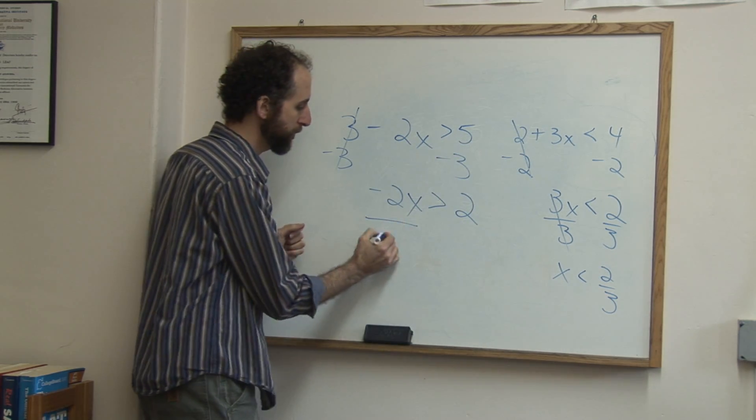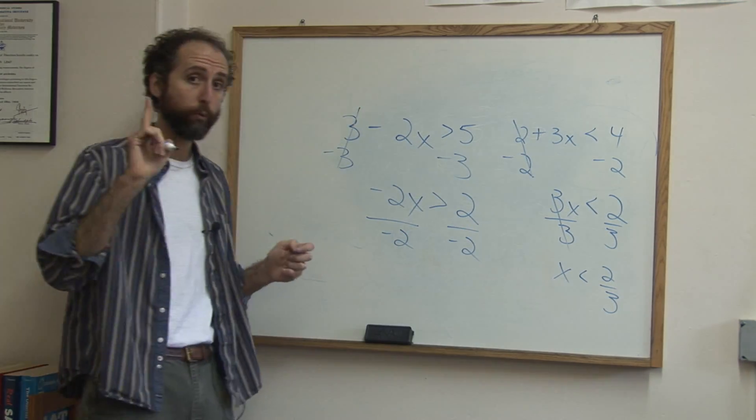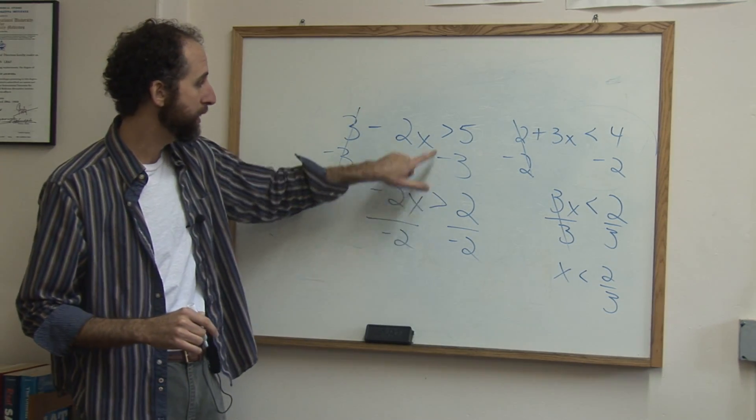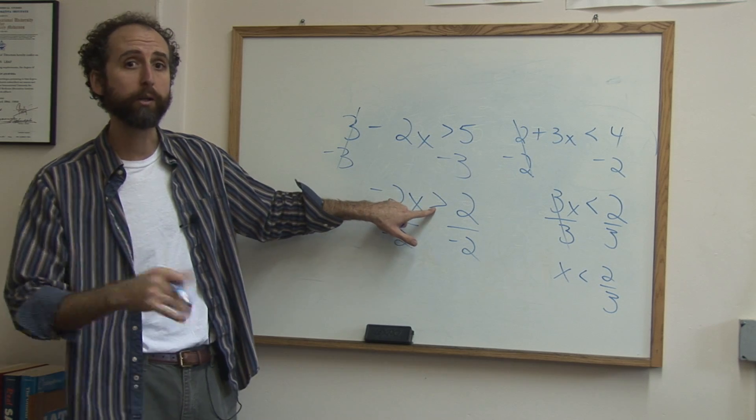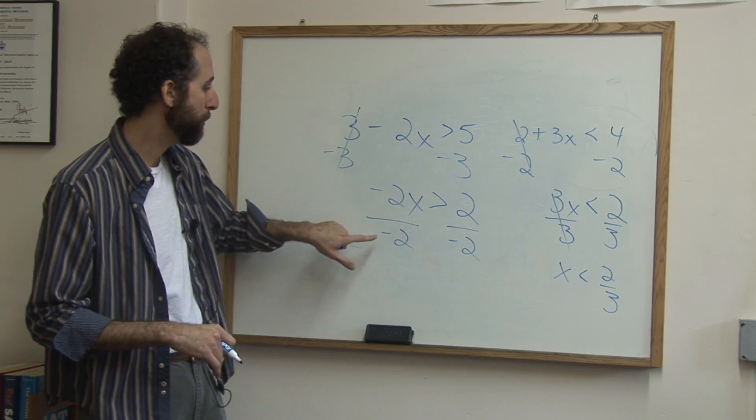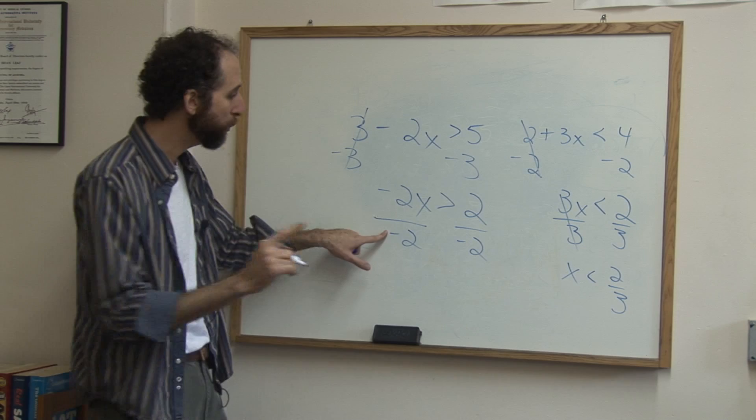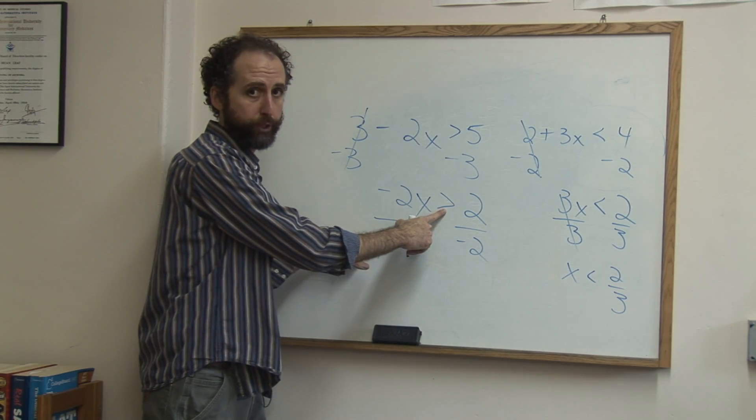Now we're going to divide both sides by negative 2 to get the x alone. This is the one trick. When you divide an inequality sign, it means not an equal sign, when you divide an inequality by a negative number, we flip the inequality sign, we change it, we reverse it.